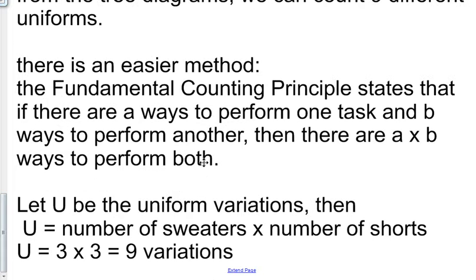So in the case of the sweaters, let U be the uniform variations. Then U is equal to the number of sweaters times the number of shorts. Three times three is equal to nine variations.